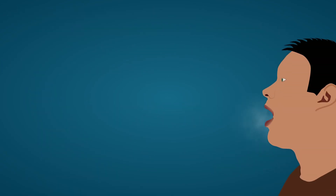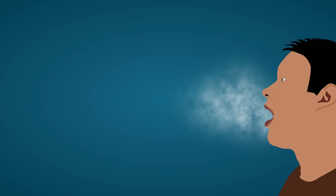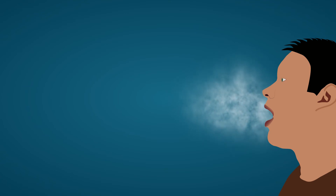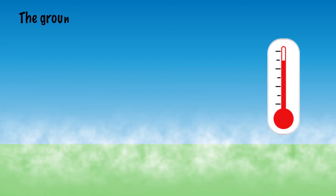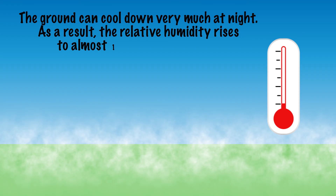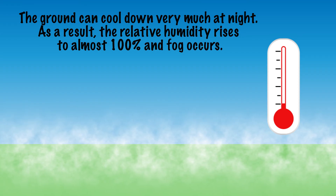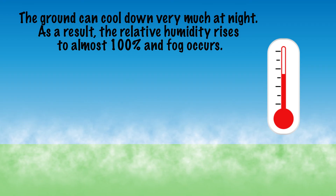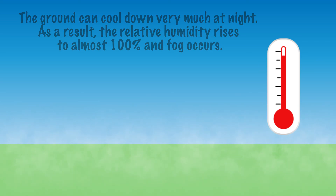We see this in practice, for example, when we exhale on a cold winter day — we also exhale water vapor. Because the warm, humid air suddenly cools down enormously, the relative humidity rises and a small cloud forms. Because this cloud mixes quickly, the water quickly evaporates again. For the same reason, fog often forms early in the morning in fall and winter. The ground can cool down very much at night, and so does the air layer above it. As a result, the relative humidity rises to almost 100% and fog is created. As it gets warmer during the day, the temperature of the air rises and the relative humidity decreases, causing the fog to disappear.